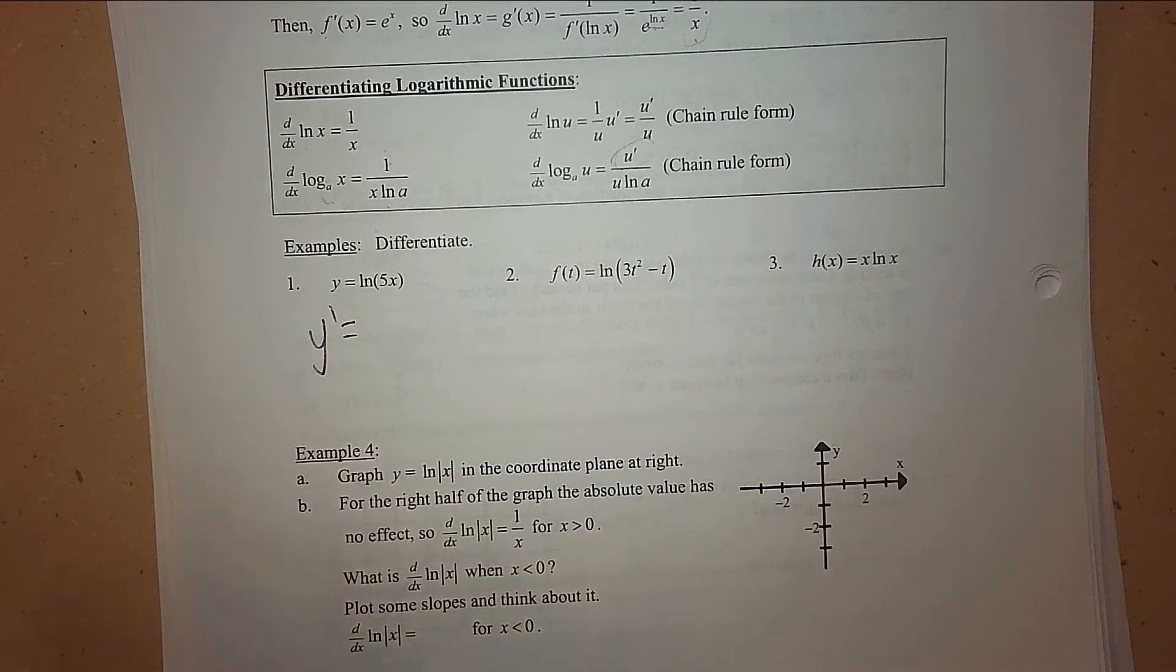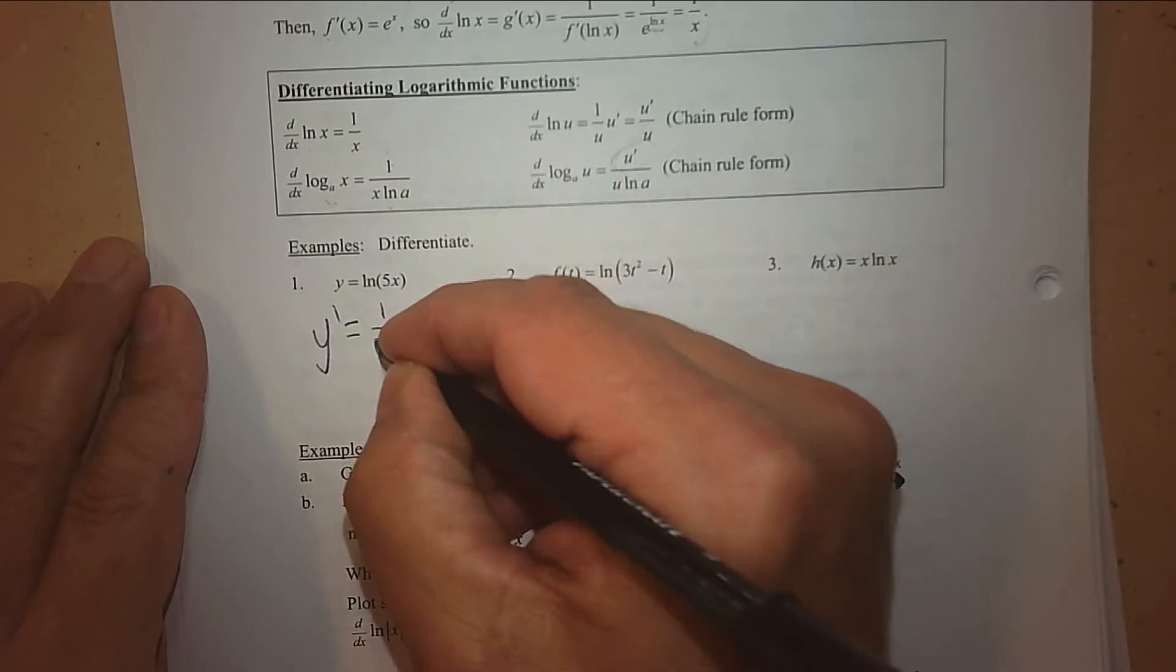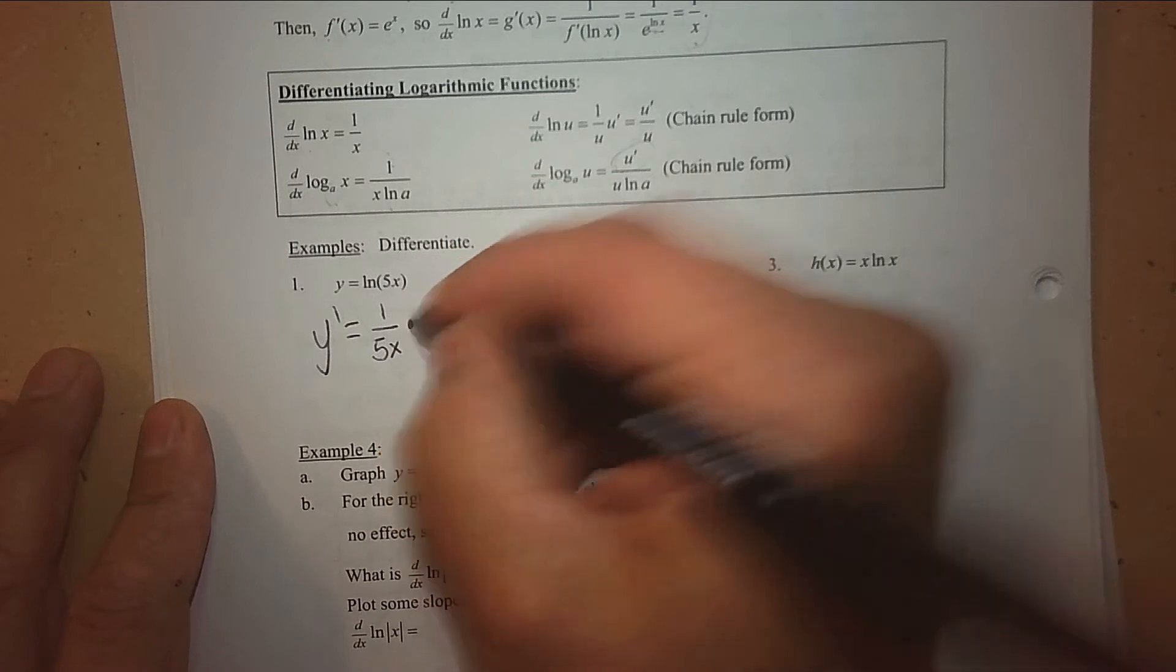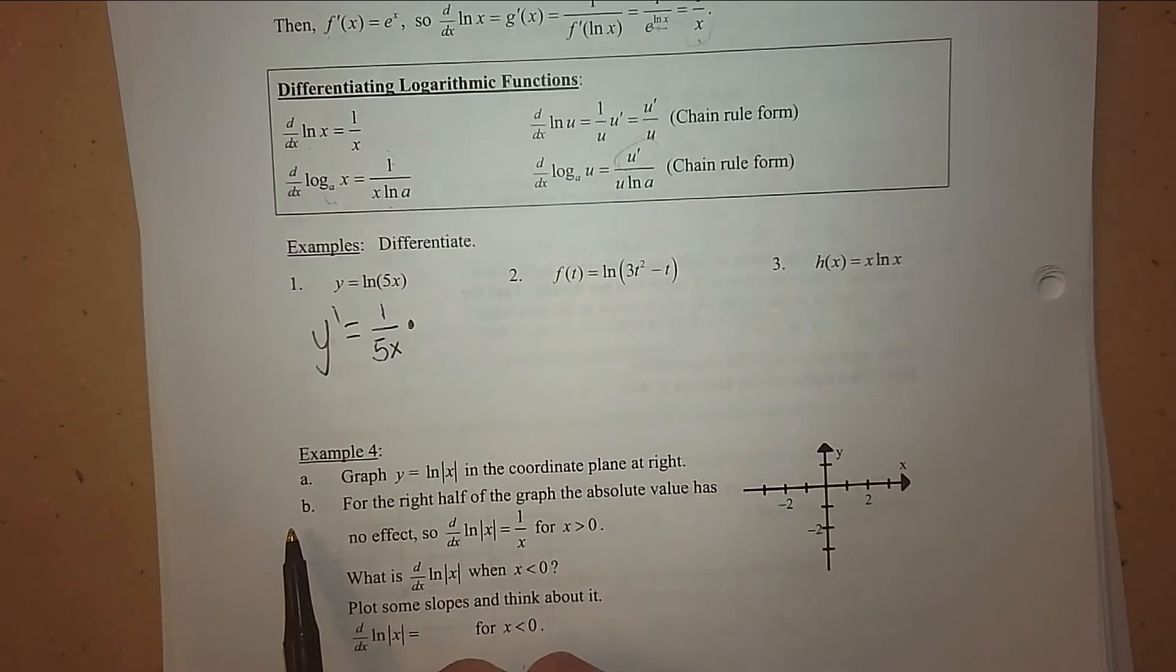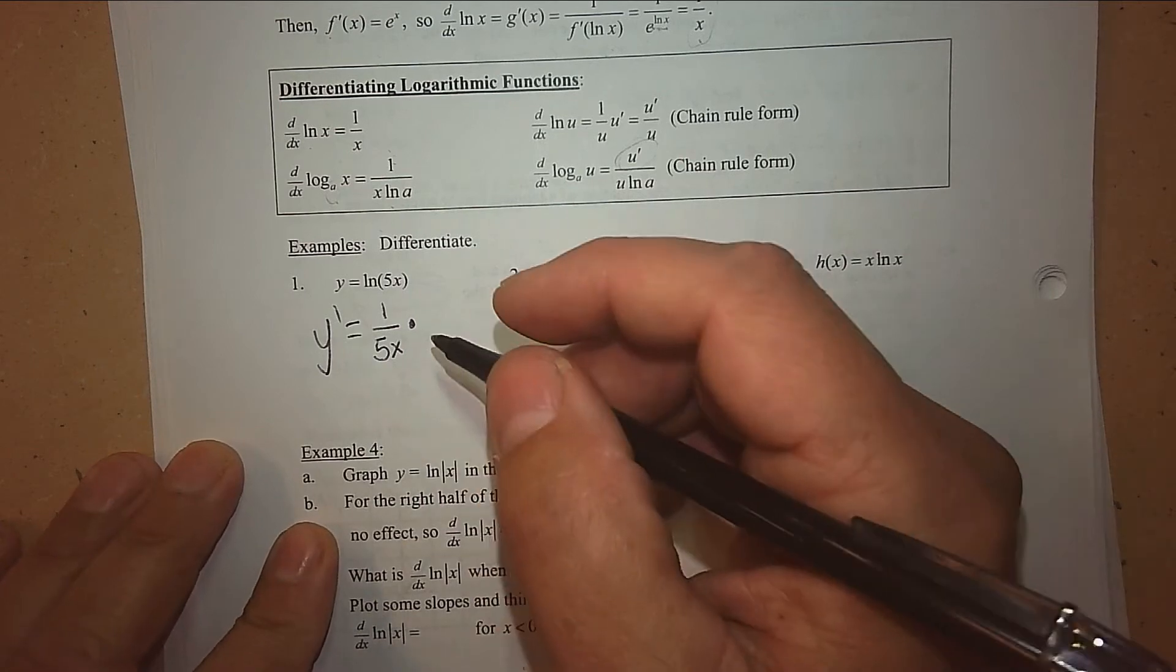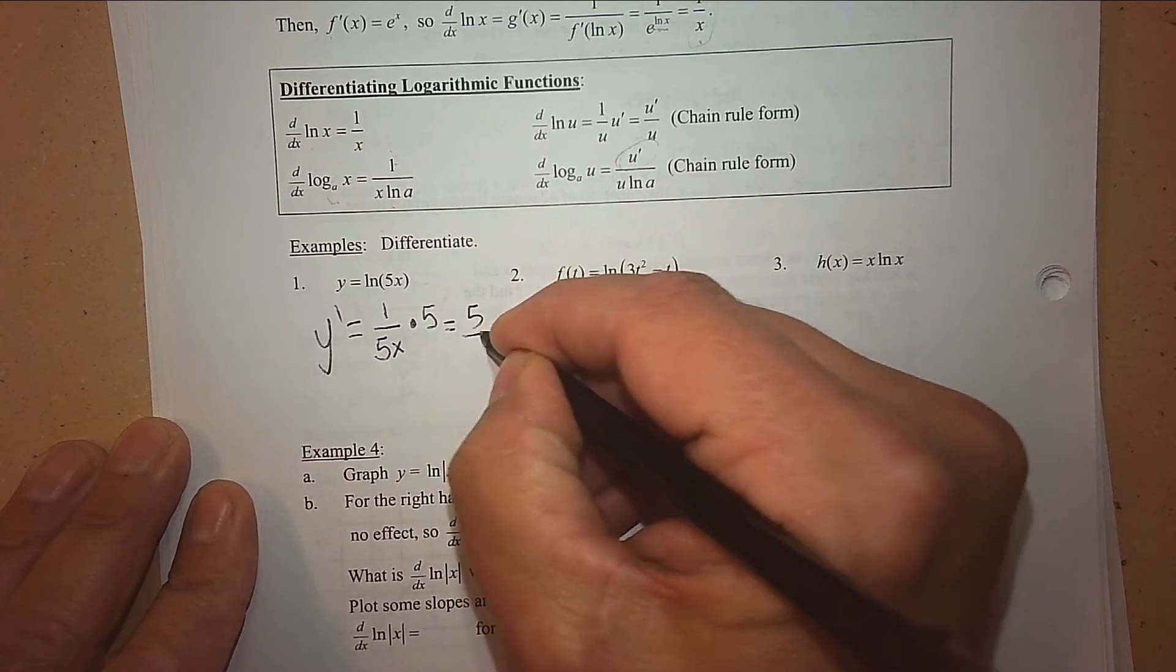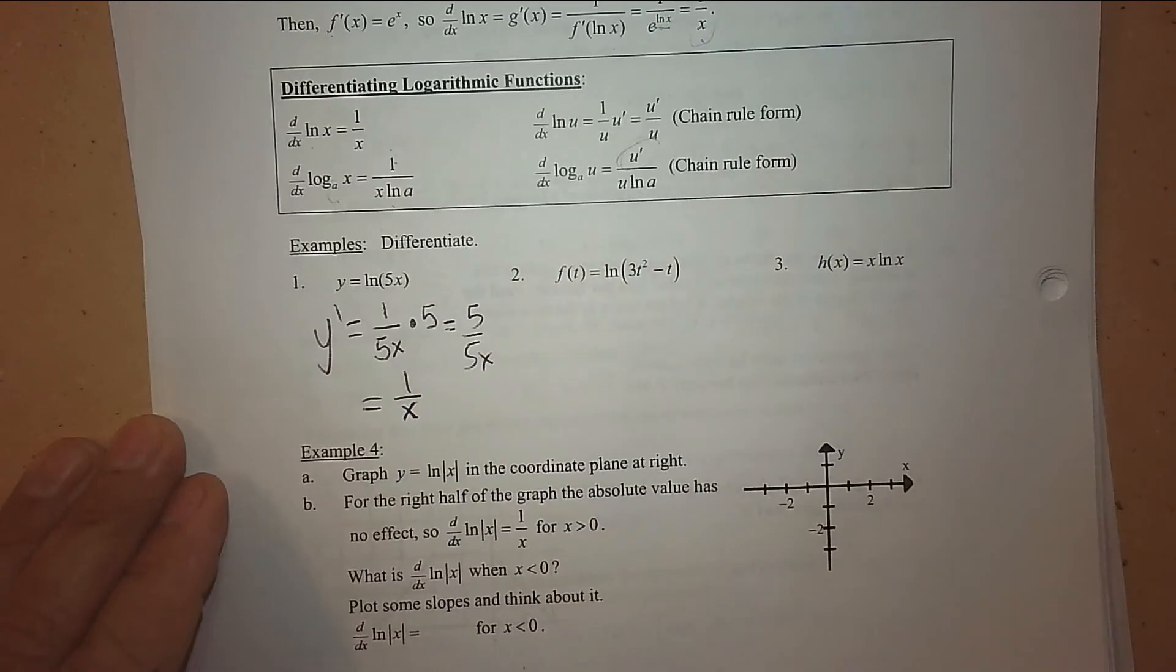How do you take the derivative of ln(5x)? It's 1 over 5x times the derivative of 5x, which is 5. That gives 5 over 5x, which equals 1 over x.